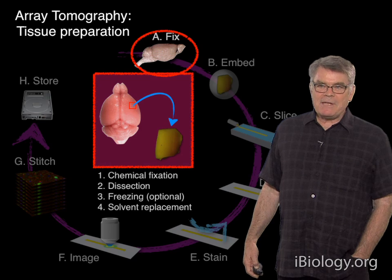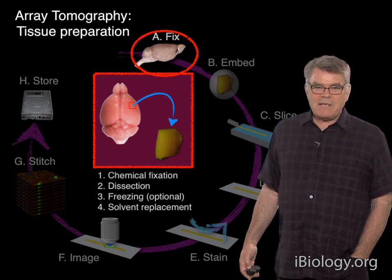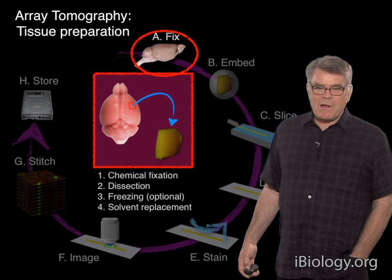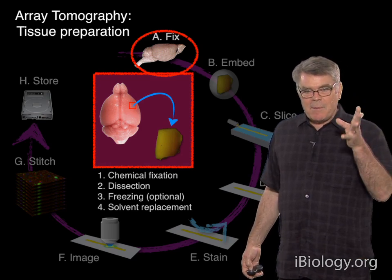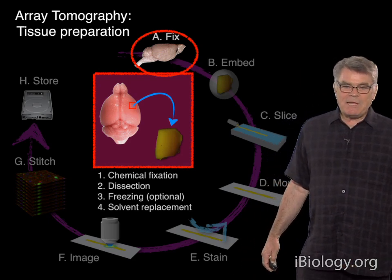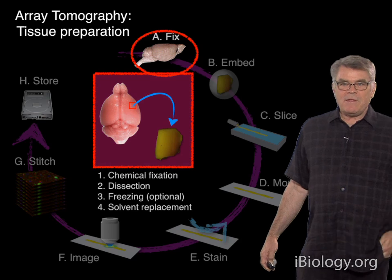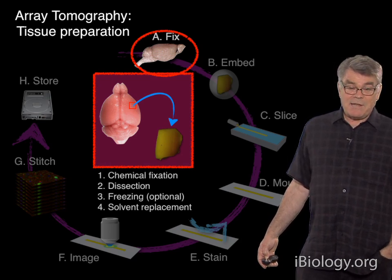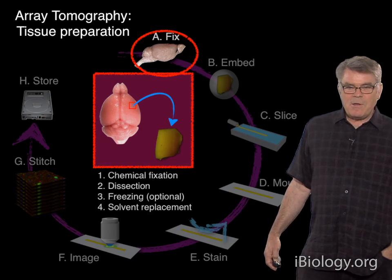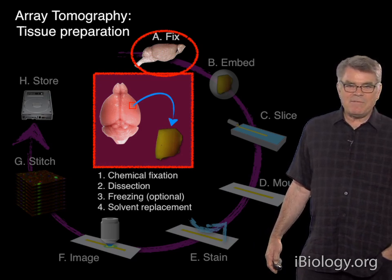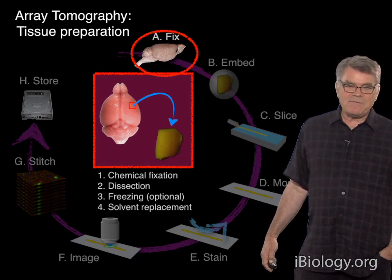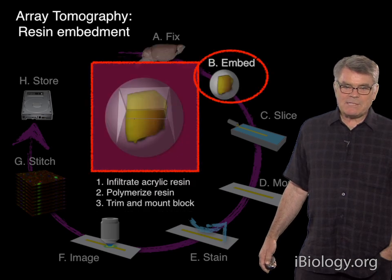Now we're going to go through each step one at a time. The first step is a chemical fixation and solvent replacement step, where the idea is to preserve your piece of tissue with all of the biomolecules right where they started out, but to replace all of the water with an organic solvent compatible with the next step. These procedures are nothing new — they have been developed by electron microscopists over the last few decades to perfect the arts of fixation and embedment for electron microscopy.